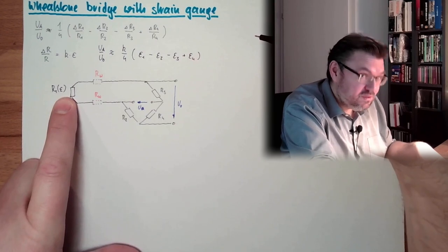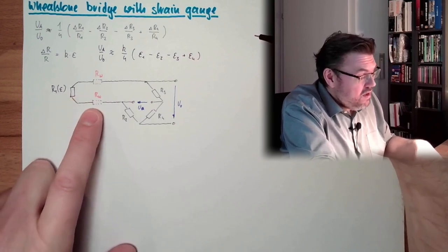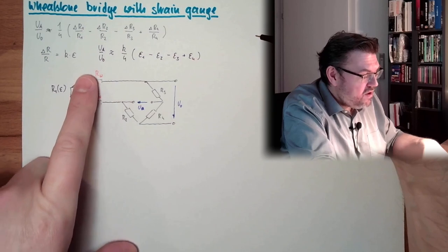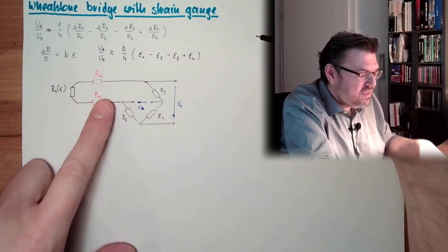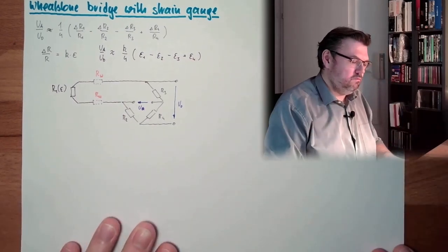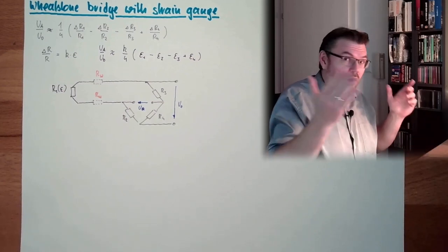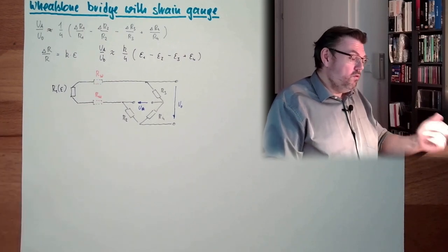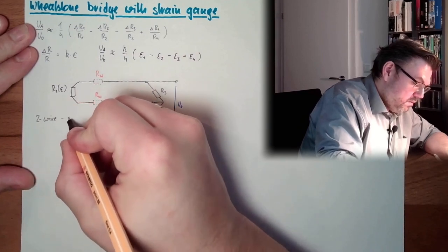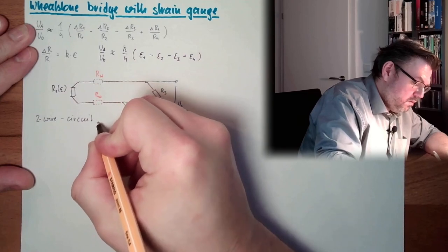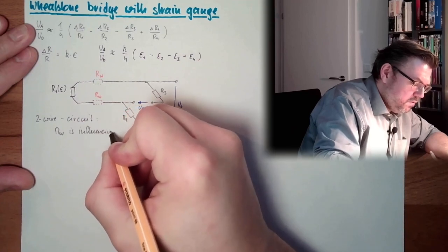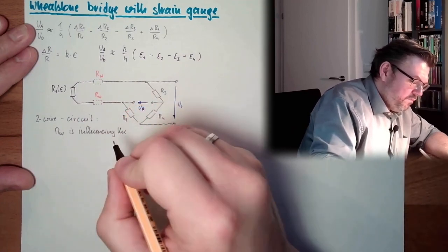So I'm measuring apparent strain even if there is no strain and no force — just because of those wire resistances, which cause a virtual delta R1. This is called the two-wire circuit, where Rw is influencing the measured value.